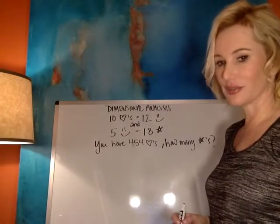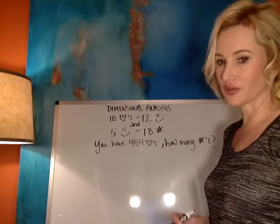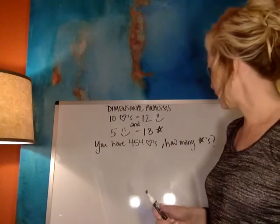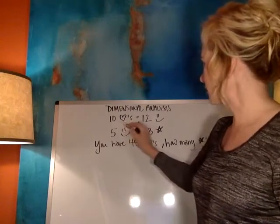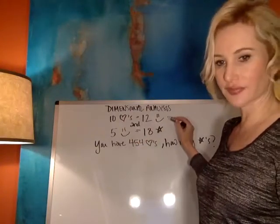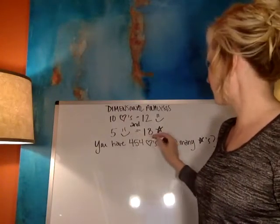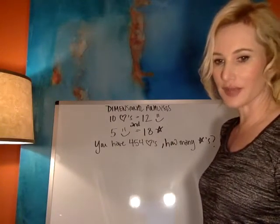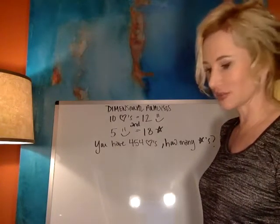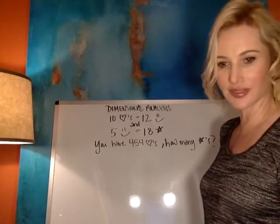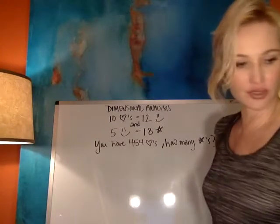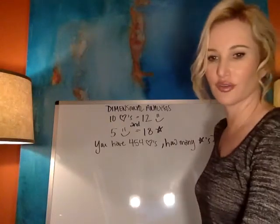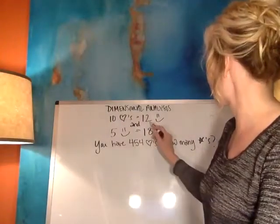I want to do a conversion that makes absolutely no sense whatsoever, as far as anything we know. I've made up units. 10 hearts are equal to 12 smiley faces. 5 smiley faces are equal to 18 stars. My point in this video is that it doesn't matter if you have never seen these units before and if they don't make any sense to you. You can still convert anything as long as you know the equivalence, meaning how they're equal to each other.